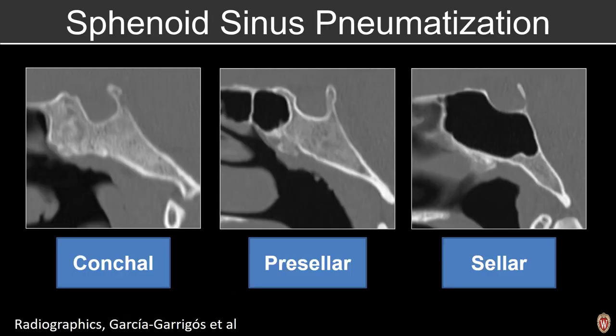Prior to skull base surgery, it's important to recognize the degree of pneumatization of the sphenoid sinus, particularly in patients being evaluated for transsphenoidal resection of an adenoma. The conchal type has no pneumatization of the sphenoid sinus. The pre-sellar type is pneumatization that stops just in front of the sella. The sellar type is complete pneumatization of the sphenoid sinus that wraps around the sella turcica.